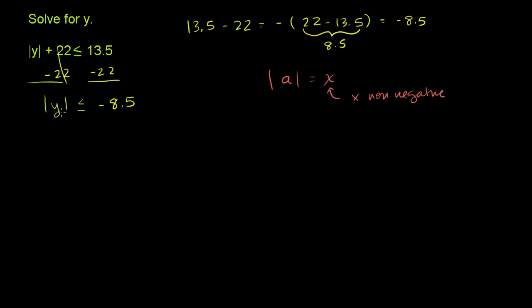Here we're saying that when we take the absolute value, it has to be less than or equal to a negative number. It's saying that it has to be a negative number. This is implicitly saying that the absolute value of y has to be negative. It not only has to be negative, it has to be less than or equal to negative 8.5.